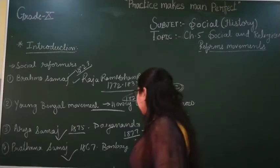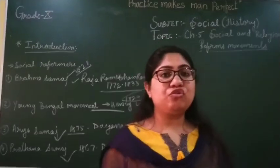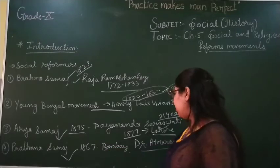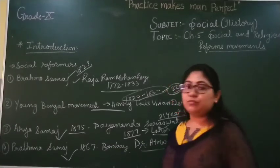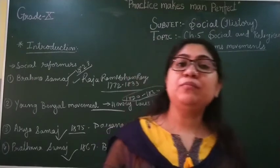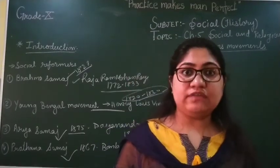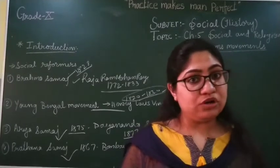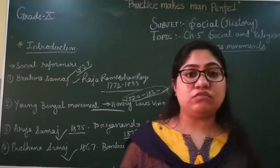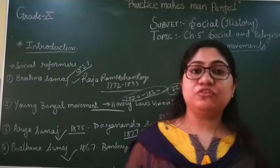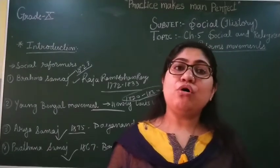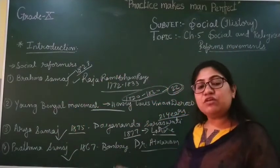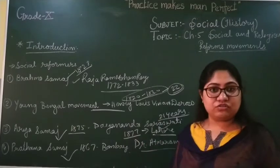The next one is Prarthana Samaj. Prarthana Samaj was also influenced by the Brahma Samaj and was started in 1867 in Bombay by Dr. Atmaram. He also provided similar things: education for women, opposition to the sati system, encouragement of widow remarriage, and relief from child marriage. The British also supported all these ethics. So all of these are the social reform movements from the 19th century.